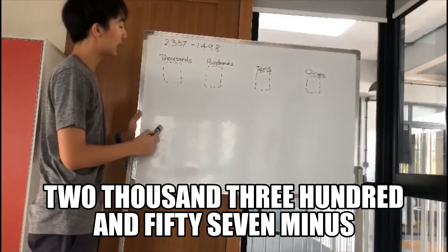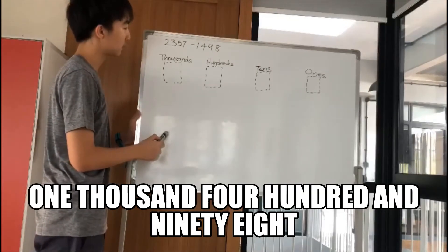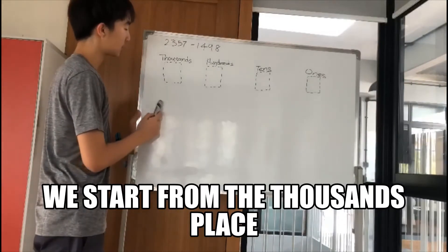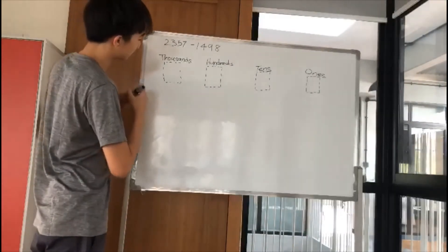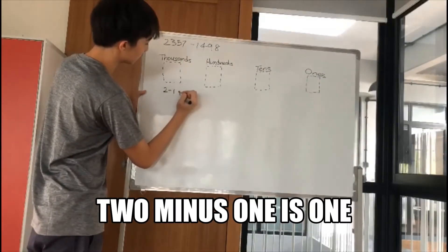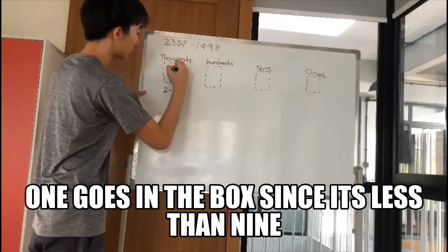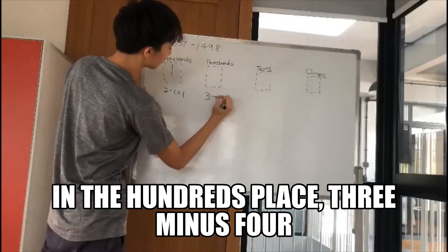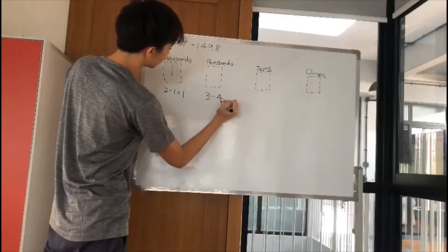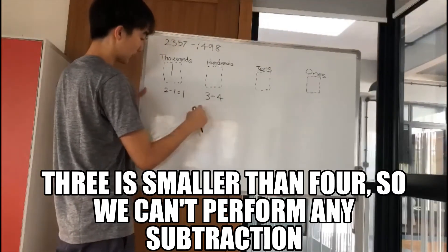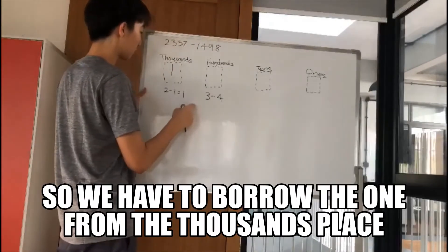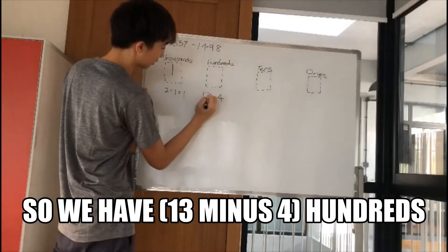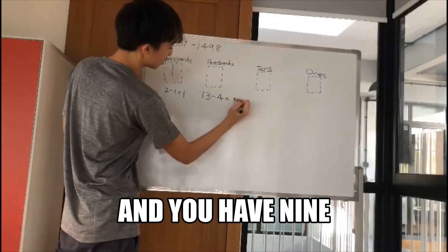Two thousand three hundred and fifty-seven minus one thousand four hundred and ninety-eight. Since this is subtraction, we do the reverse — we start from the thousands place. Two minus one is one; one goes in the box since it's less than nine. In the hundreds place, three minus four: three is smaller than four, so we can't perform subtraction. We have to borrow the one from the thousands place, and that becomes ten hundreds. So we have thirteen minus four hundreds, and you have nine.